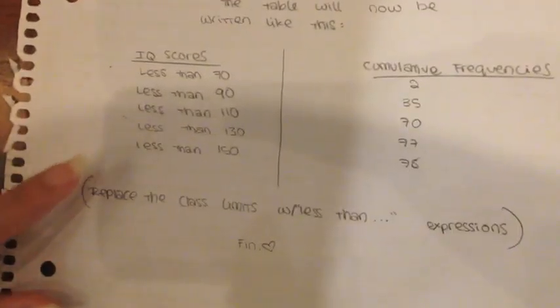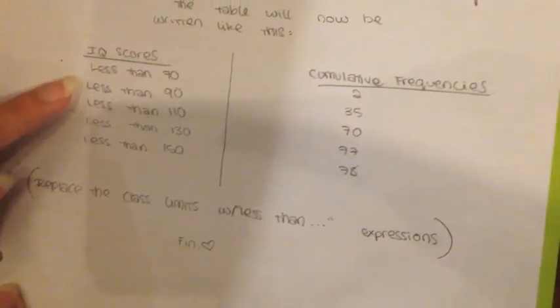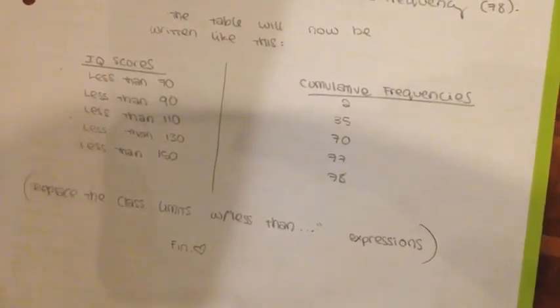And as a result, the table will end up looking like this. You're going to replace the class limits shown here with expressions of less than. So these will now look like less than 70, less than 90, less than 110, and so on and so forth. And that's it.